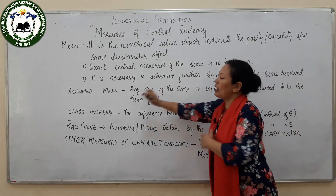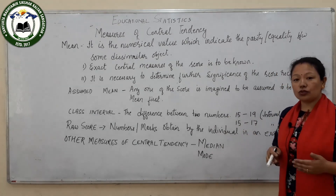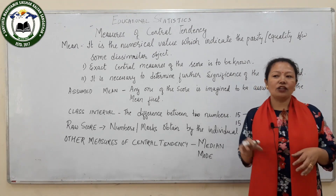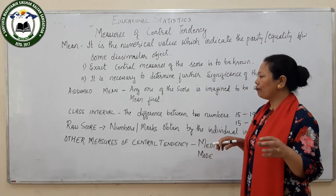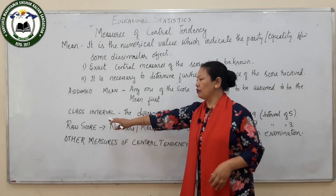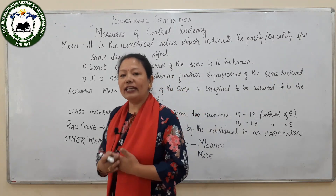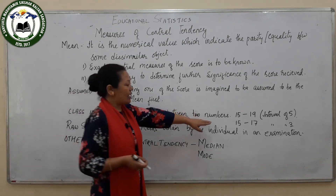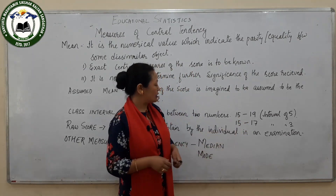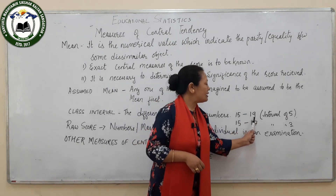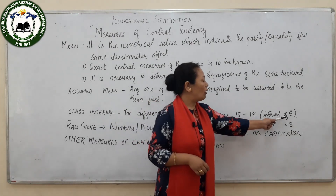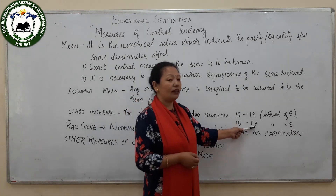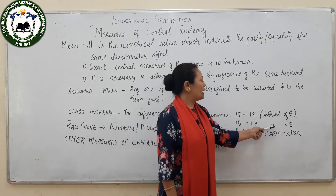The assumed mean is any one number from the scores which is imagined to be the mean — it is the first assumed mean — but that number has to be very close to the scores. Apart from that, you must remember what a class interval is. The class interval is the gap or the difference between two numbers. For example, with numbers 15 and 19, the gap between them is 5, so we say there is an interval of 5. Similarly, between 15 and 17 we have an interval of 3.